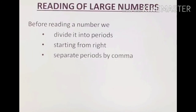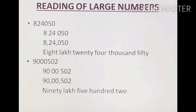Reading of large numbers. Before reading a number, we divide it into periods starting from the right, and separate the periods by commas. Let us take a few examples. Example one: 8,24,050. We separate it with commas as shown, and we read it as eight lakh twenty four thousand fifty.